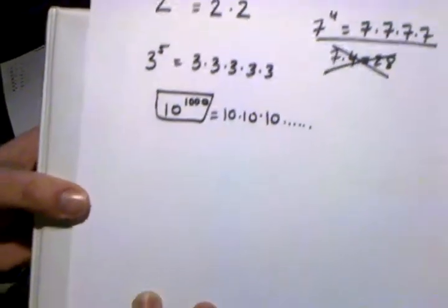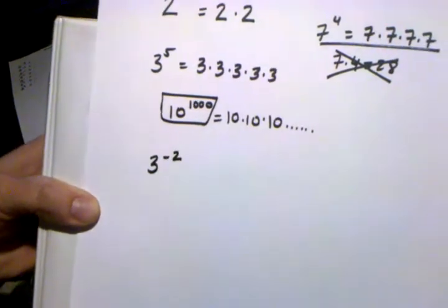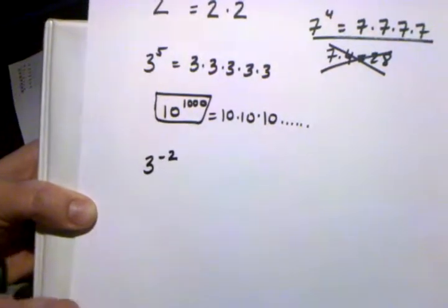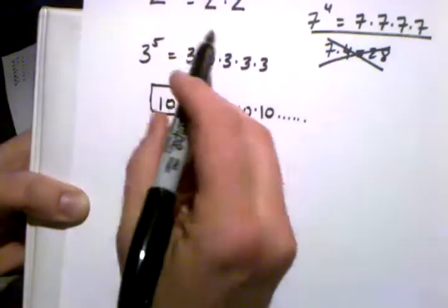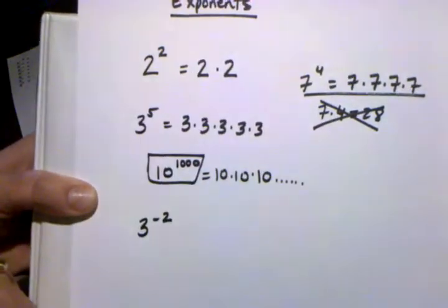But when it gets confusing is sometimes we get an exponent that looks like that, where we actually have a negative number for the exponent. Up above, all I've shown you is positive numbers, 2 to the second power. That's a positive 2 in the place of that exponent.